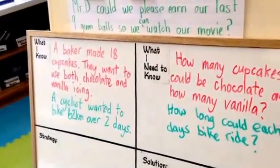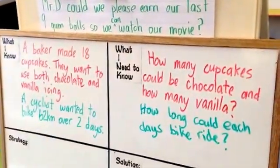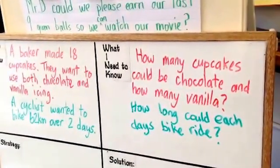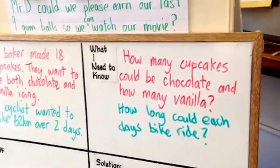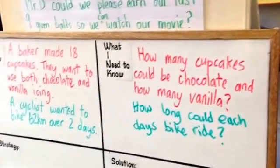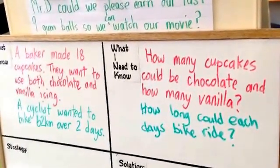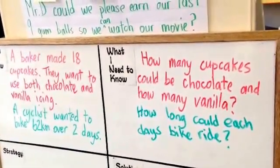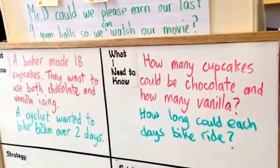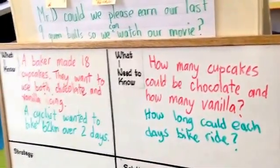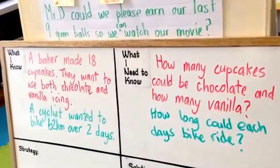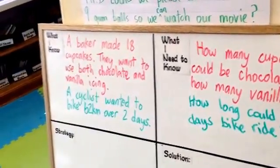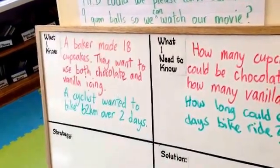So our first problem: a baker has made 18 cupcakes and they want to use both chocolate and vanilla icing. How many cupcakes could be chocolate and how many cupcakes could be vanilla? And for our second problem, the cyclists wanted to bike 62 kilometers over two days. So how far could each day's bike ride be?